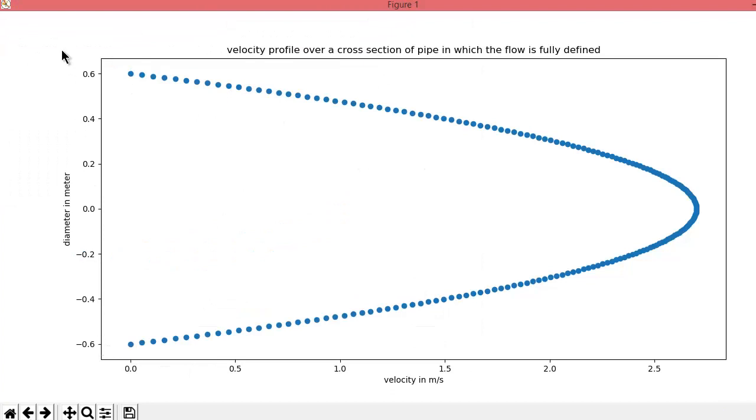And it will plot the graph. You can see minus 6 to 6. So 0 to 6 is the R and negative 6 to 6 is basically the diameter of the pipe. So here you see the velocity here is 0 meter per second and increasing up to 2.5. And here you get the maximum velocity.